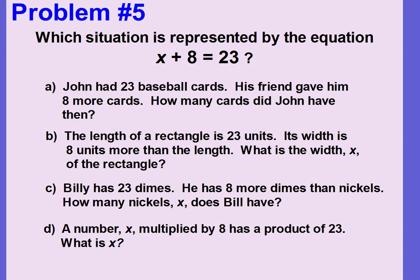Problem number five. Which situation is represented by the equation x plus 8 equals 23? Let's look at answer choice A: John had 23 baseball cards. His friend gave him 8 more — 'more' means to add. John had 23 baseball cards, so 23 is the equals amount. His new total minus the 8 that he was given equals his original amount of 23. So this gives x minus 8 equals 23, not what we want.